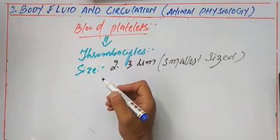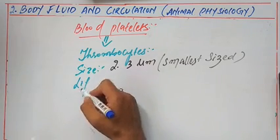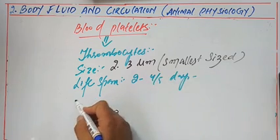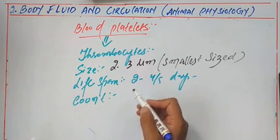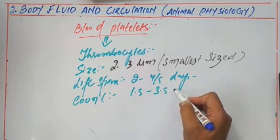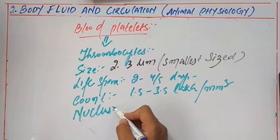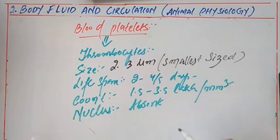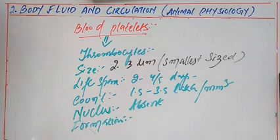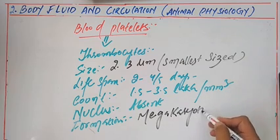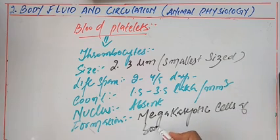What is the life span of blood platelets? The life span is 2 to 4 to 5 days. The total platelet count is 1.5 to 3.5 lakh per cubic millimeter. The formation of blood platelets takes place from the megakaryotic cells of bone marrow.